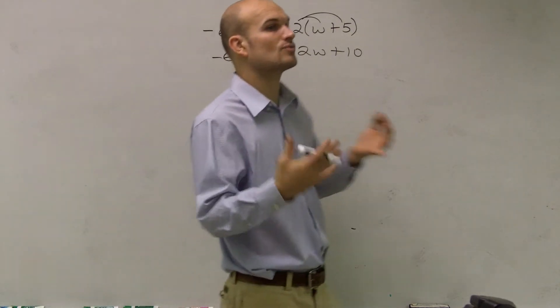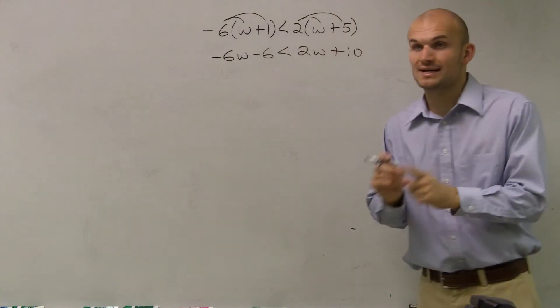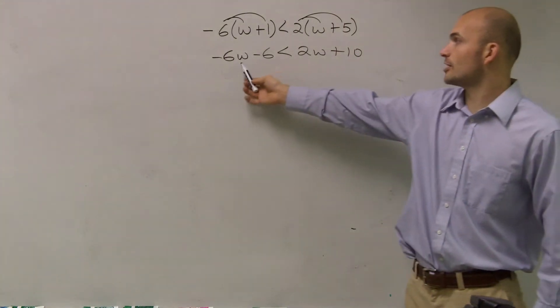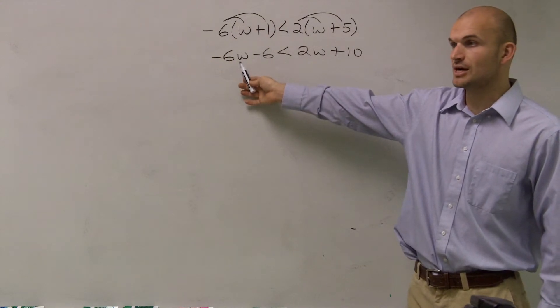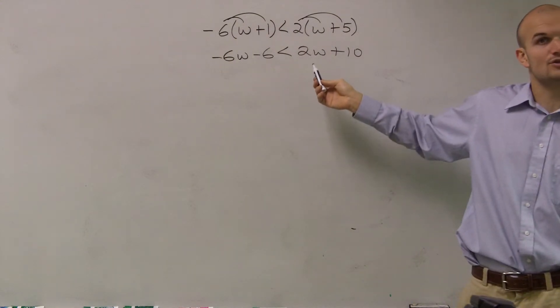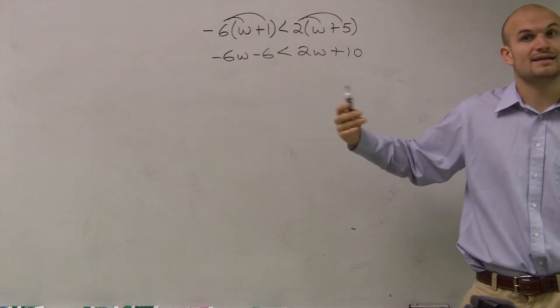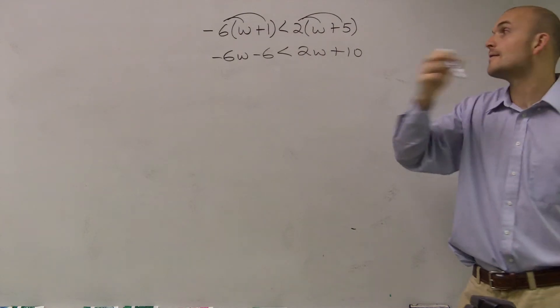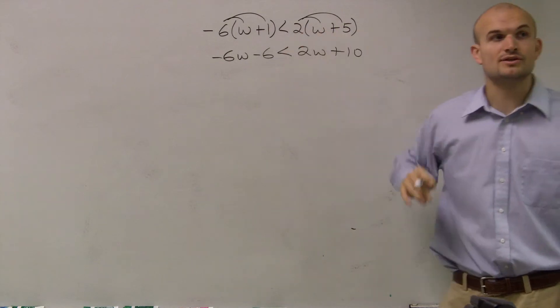Now, remember, it says solve and graph the inequality. So that means I need to solve for one variable. Right now I have a variable on the left, negative 6w, and I have a variable on the right, 2w. So what I need to do is I need to get the variables to the same side. I can add the 6w to the other side.